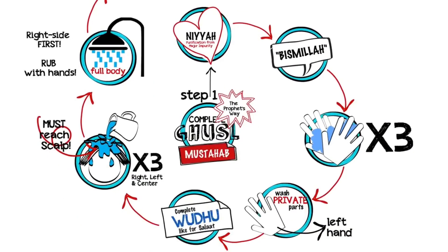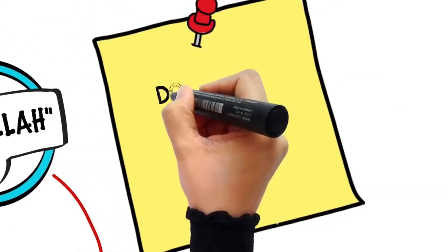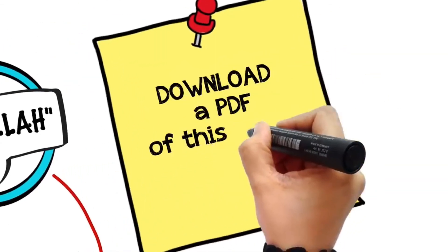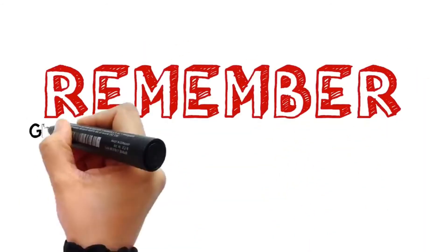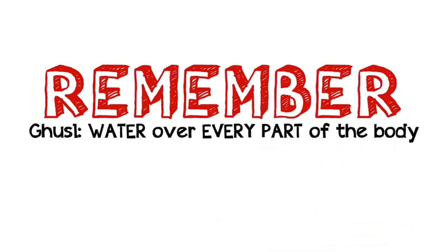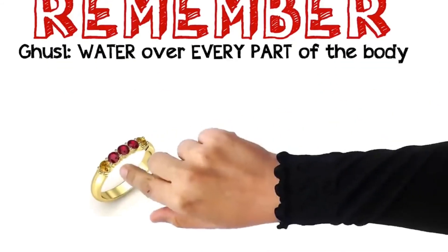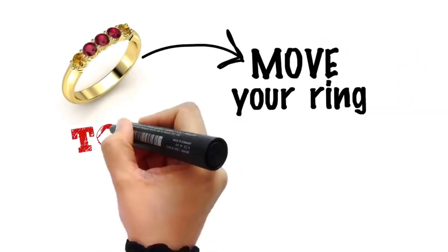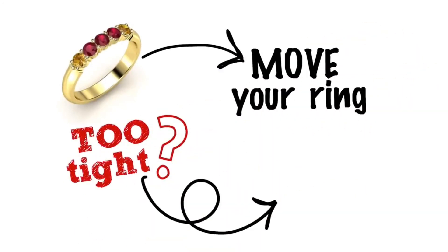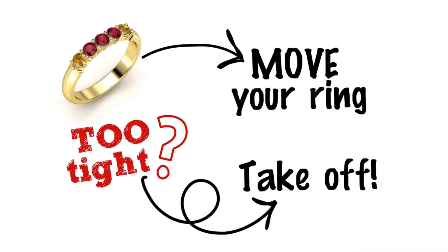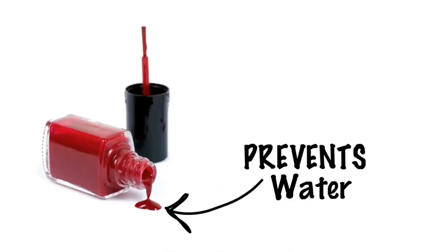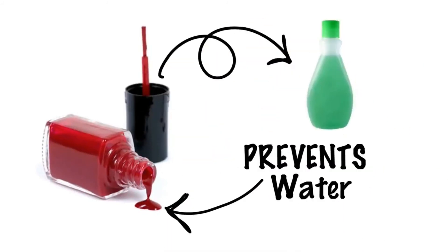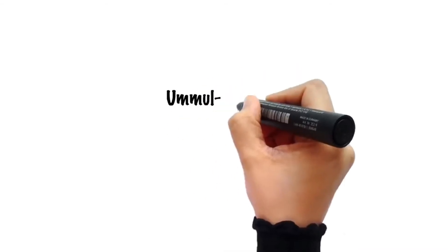These are the etiquettes of the complete Ghosli. Ghosli essentially means letting water run over every part of your body. So if you are wearing a ring, you should move it, and if it is so tight that water won't reach the skin underneath, then you have to remove it. Cosmetic items which form a barrier and prevent the water from reaching your skin must also be taken off.